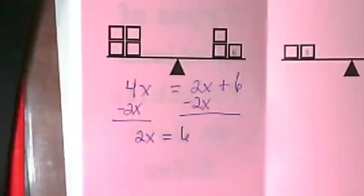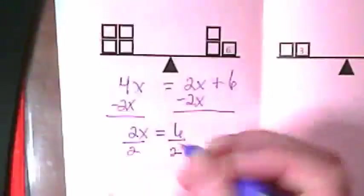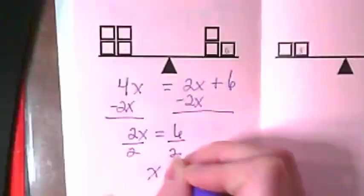What's my next step, everyone? Divide 2. Yeah. I want to get that invisible 1 here, so I have to divide by 2. And I end up with X equals 3.